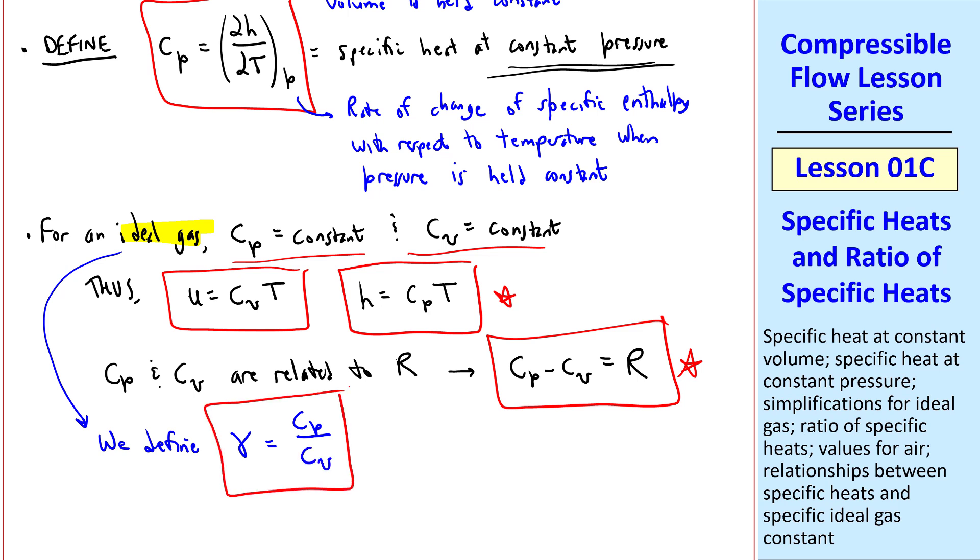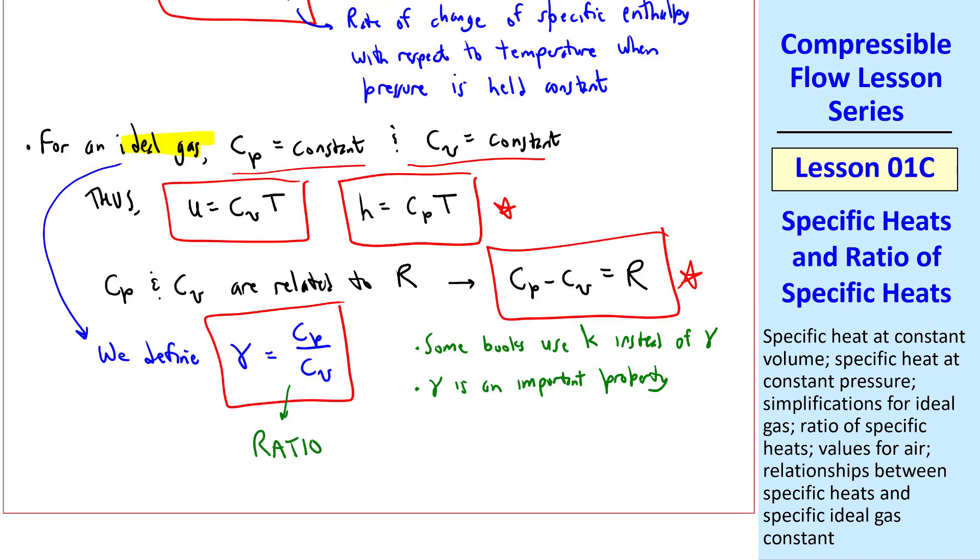A couple comments about this. Some books, mostly thermo books, use K instead of gamma. This is the notation we adopted in my fluid mechanics book. But most people who work in compressible flow use gamma. Gamma is a very important property for compressible flow, simply called the ratio of specific heats. And if you ever forget which one goes on top and which on bottom, P comes before V in the alphabet, so P is on top.